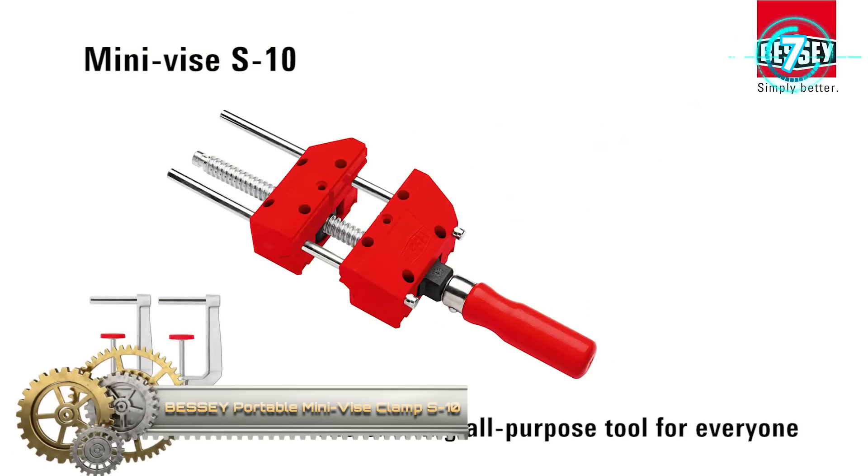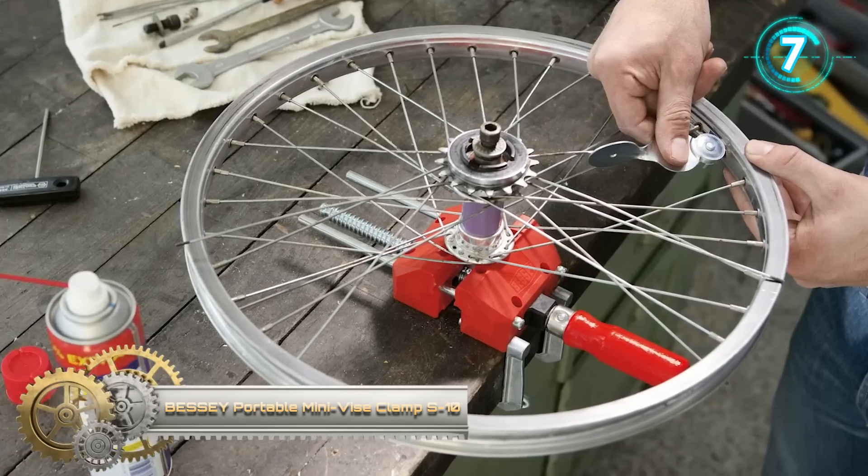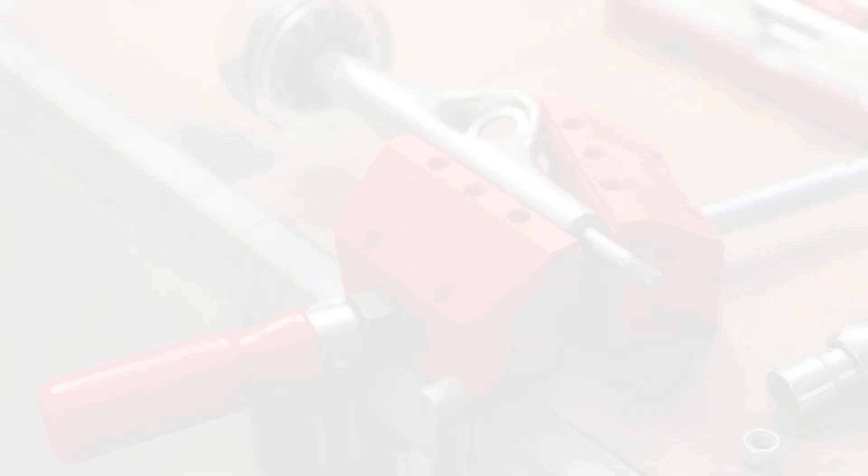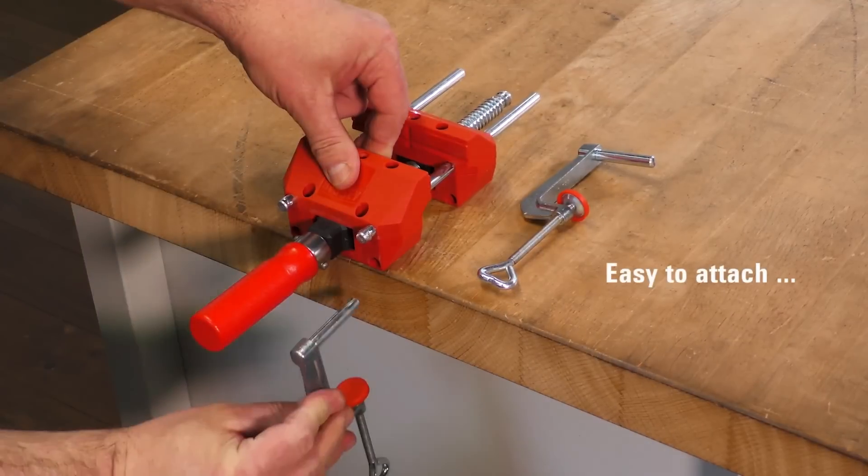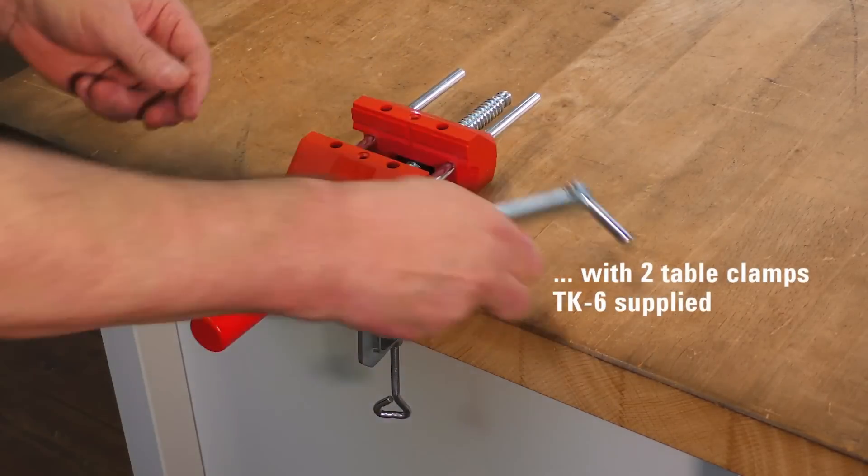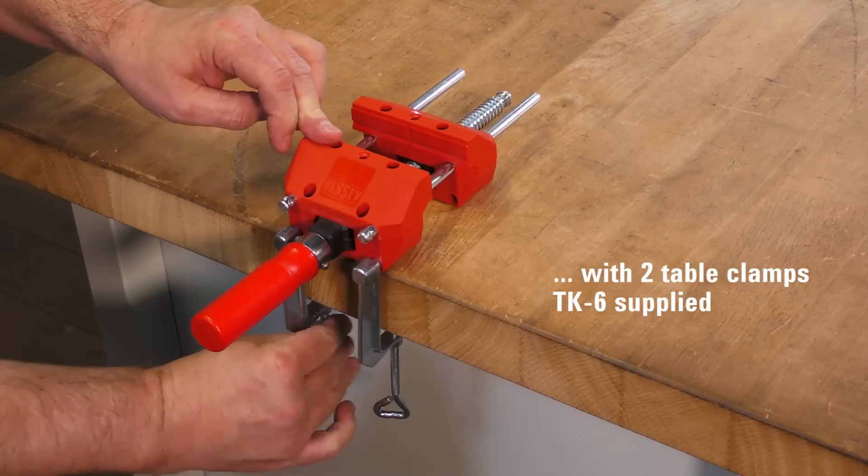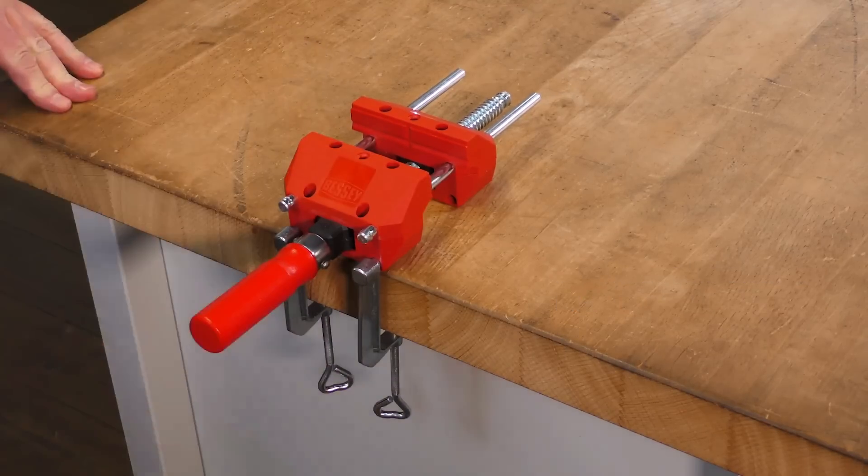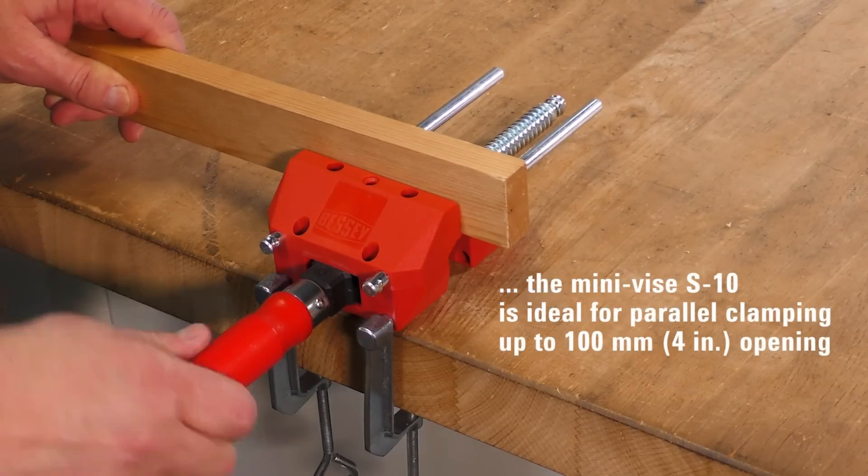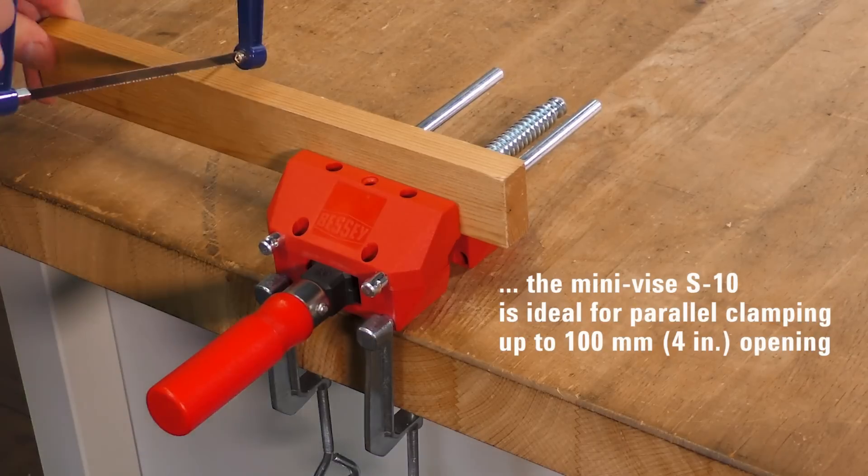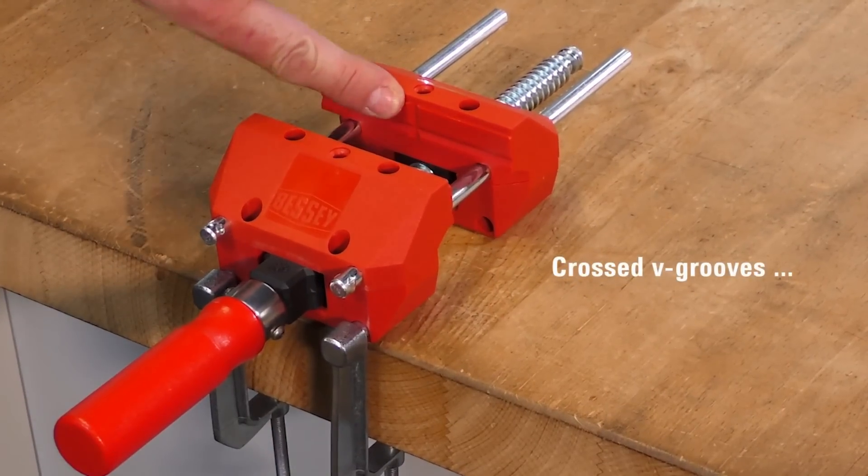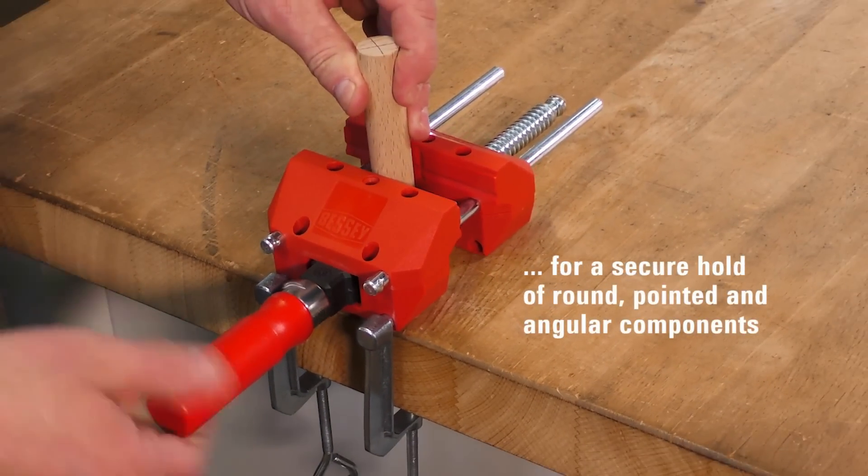Bessy S-Den Portable Mini-Vise Clamp. The portable mini-vise clamp S-Den is ideal for holding round, rectangular, and odd-shaped objects. The non-marring jaws are glue-resistant. With guide rods, the S-Den Mini-Vise is ideal for small jobs that need parallel clamping.